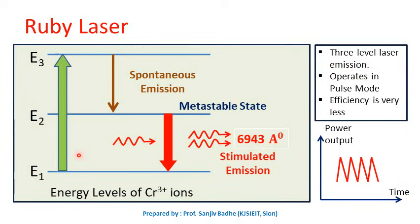When light is incident on the ruby rod, chromium ions are excited from the ground level to the higher energy level E3. E3 is not a metastable state, so the chromium ions will not stay in E3 for a long time. They will immediately fall down to the lower energy level due to spontaneous emission. Energy level E2 is a metastable state with a lifetime of the order of a few milliseconds. Chromium ions will stay in E2 for some time, and population inversion is achieved between energy level E2 and energy level E1.